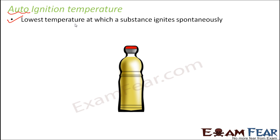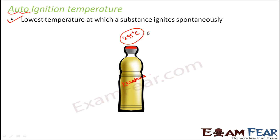Now when you look at the same kerosene — we saw the flashpoint of kerosene which was somewhere around 38 to 70 degrees Celsius. When you look at the auto-ignition temperature of kerosene, you see that it is somewhere around 295 degrees Celsius, which is very high.